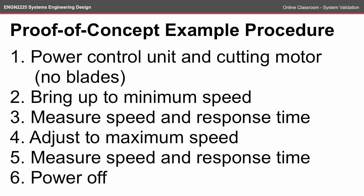A really simple example of the adjustable speed test might be: first, power the control unit and the cutting motor without blade — at this stage there's no need to have the whole cutting system working, we're just looking at the control unit for the speed. Second, bring it up to the minimum speed. Third, measure the speed and perhaps the response time it took to get to that speed. Next, adjust the system to the maximum speed, and again measure that speed and response time. Then power off.